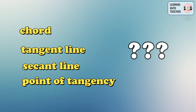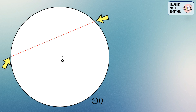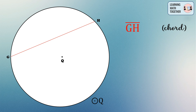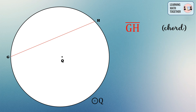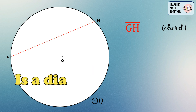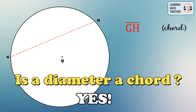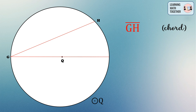Let's draw a circle — we have circle Q. Then let's draw a straight line segment whose both endpoints lie on the circle. We name this one GH, or line segment GH. Line segment GH is what we call a chord. A chord is a straight line segment whose both endpoints lie on the circle. You may also ask: is a diameter a chord? The answer is yes — a diameter is a chord because both endpoints of the diameter lie on the circle.